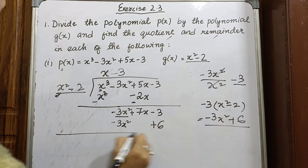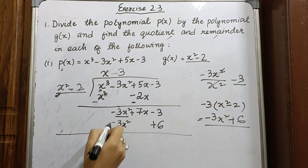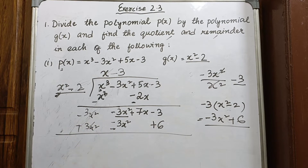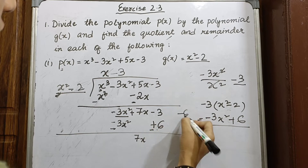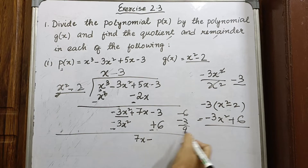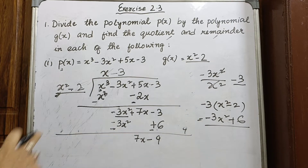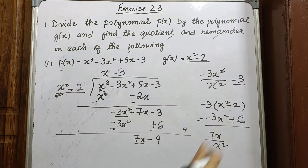Minus 3x² plus 3x² cancels to zero. What remains: 7x stays, and minus 6 minus 3 — since the bigger number 6 is negative, we get minus 9. So we now have 7x minus 9.